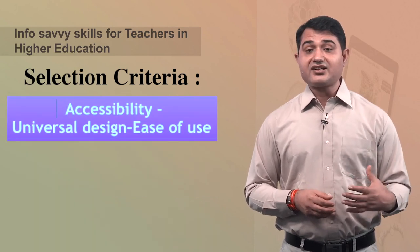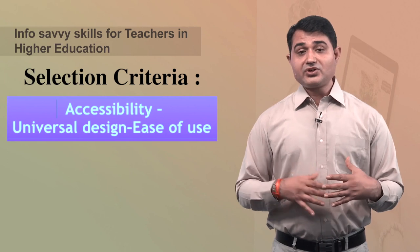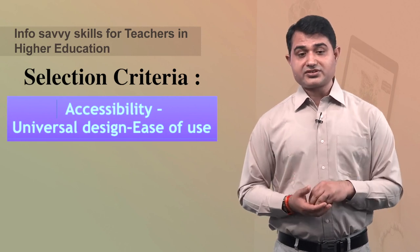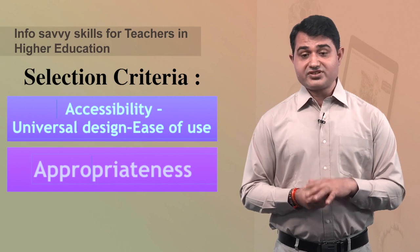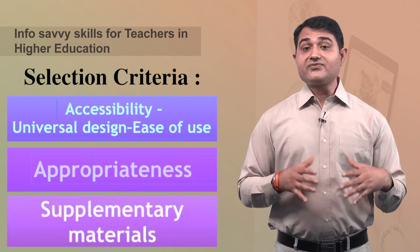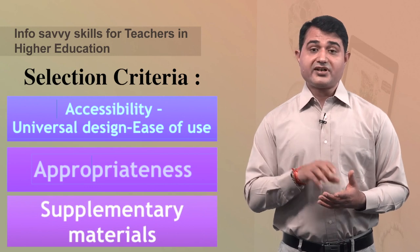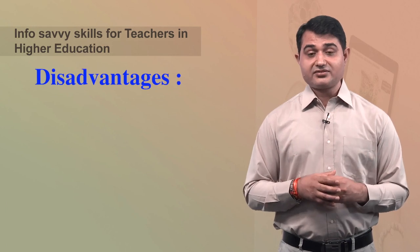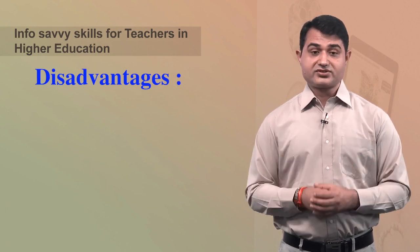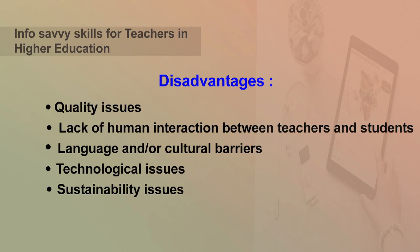Accessibility and universal design of format — the format should be universal and content appropriateness should be considered. Supplementary material alongside OER is definitely an added advantage. The disadvantages of selecting open educational resources include quality issues, lack of human interaction between teachers and students, language or cultural barriers, technical issues, and sustainability issues.